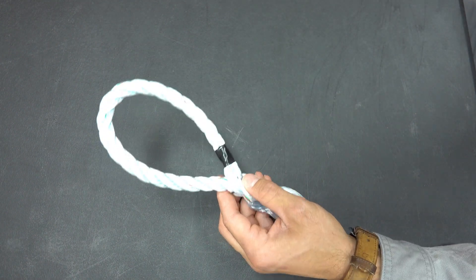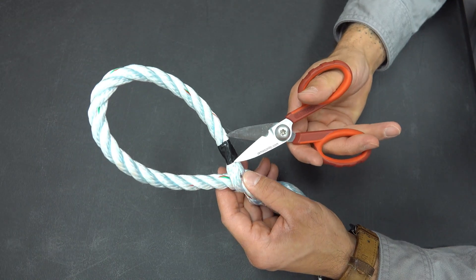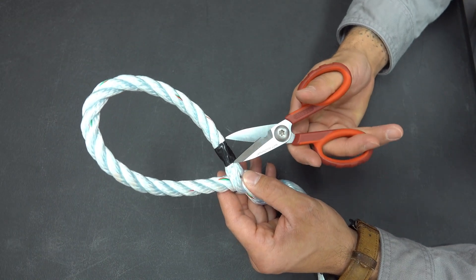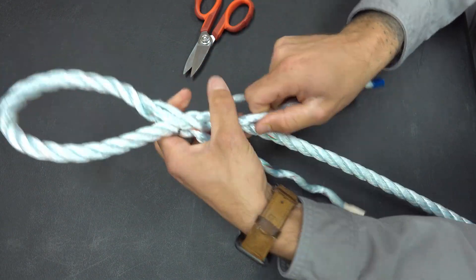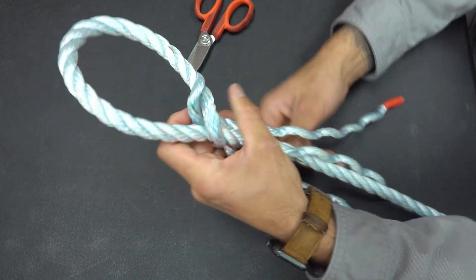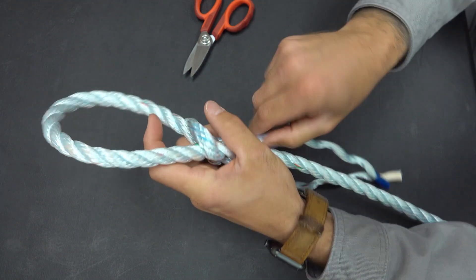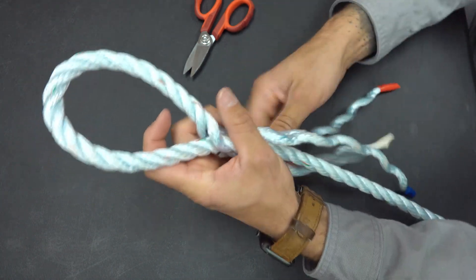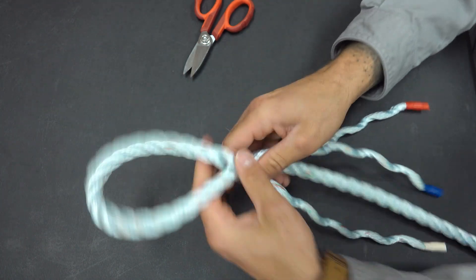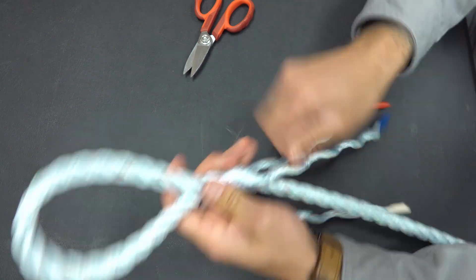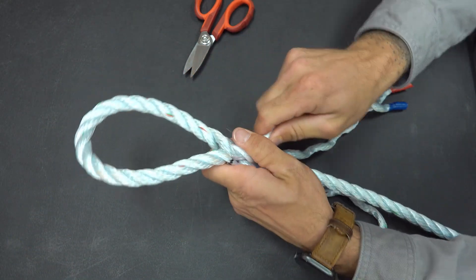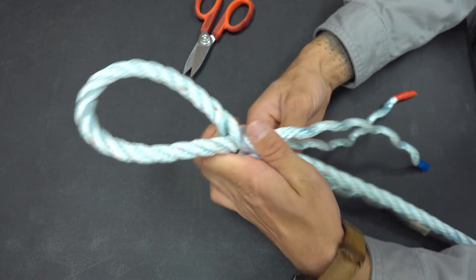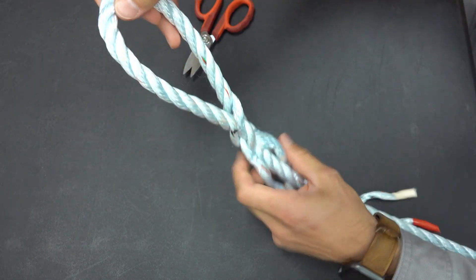This time I'm going to go ahead and take my scissors or a knife, whatever you have. Be sure not to cut yourself. I'm going to dress each one of these individually and dress it to make a nice and tight eye splice. See how it's getting rid of all of that extra slack. That is what you want.